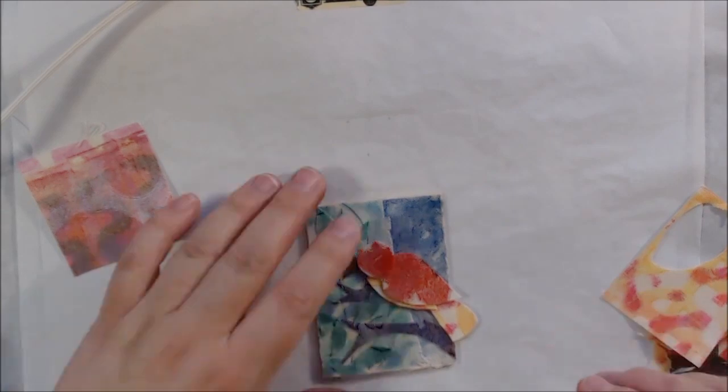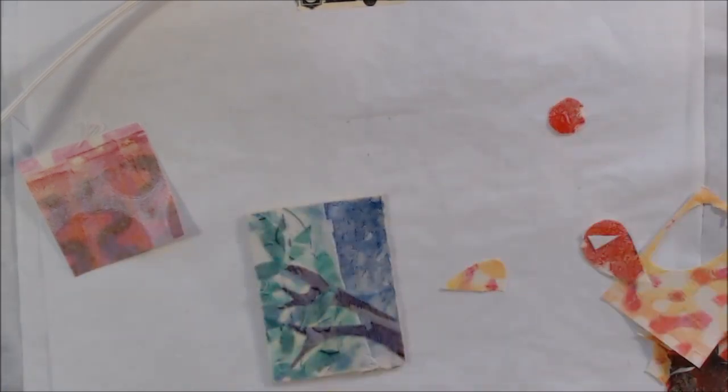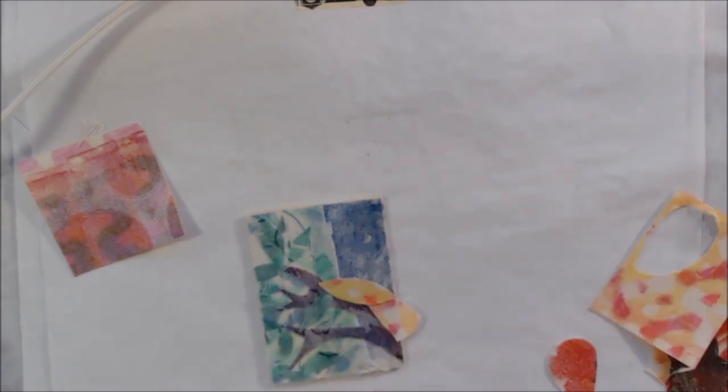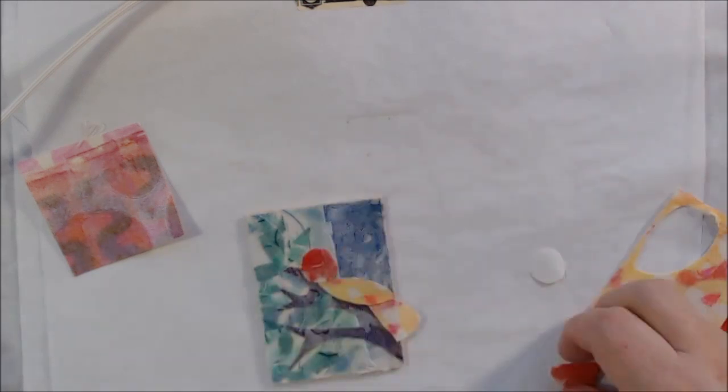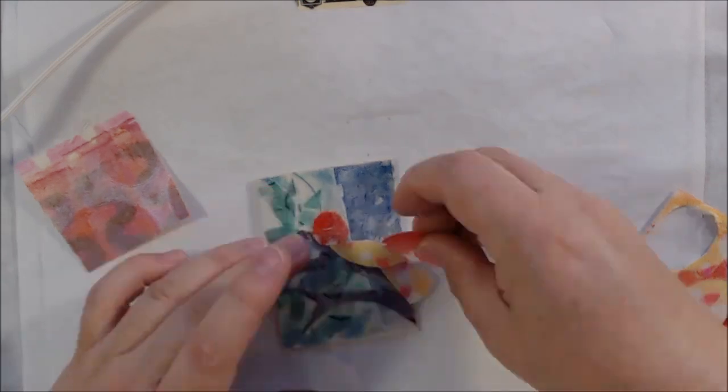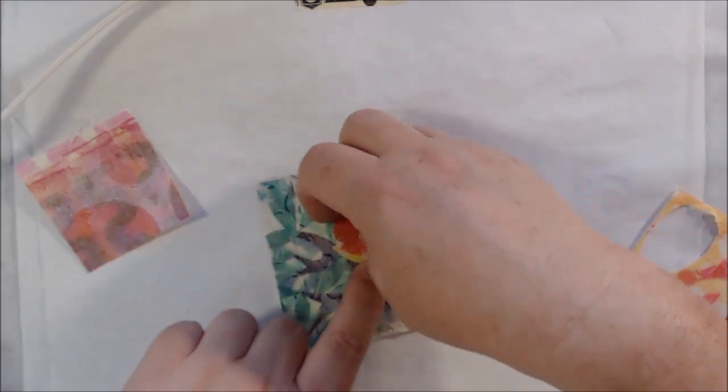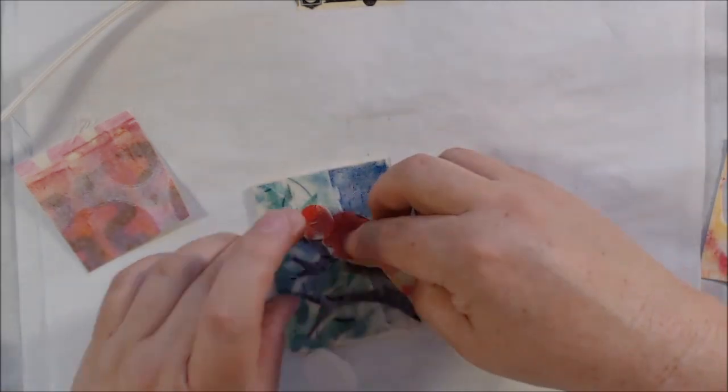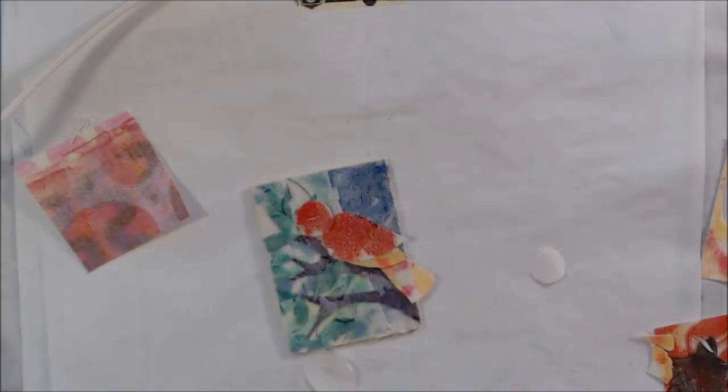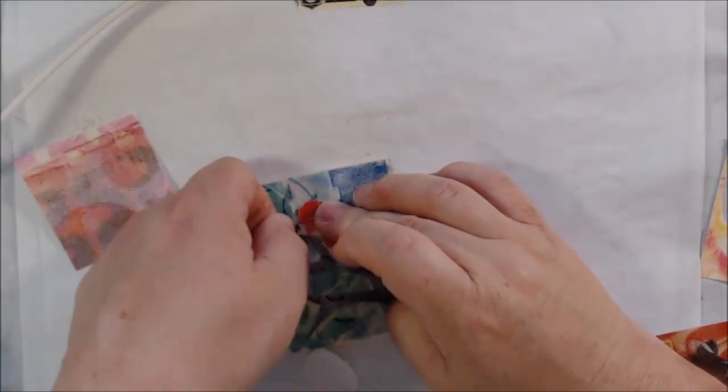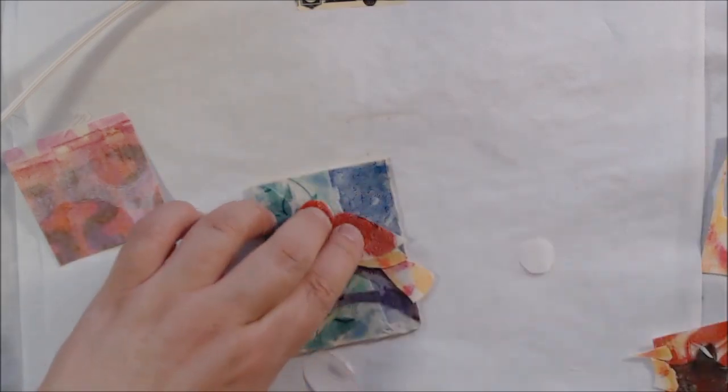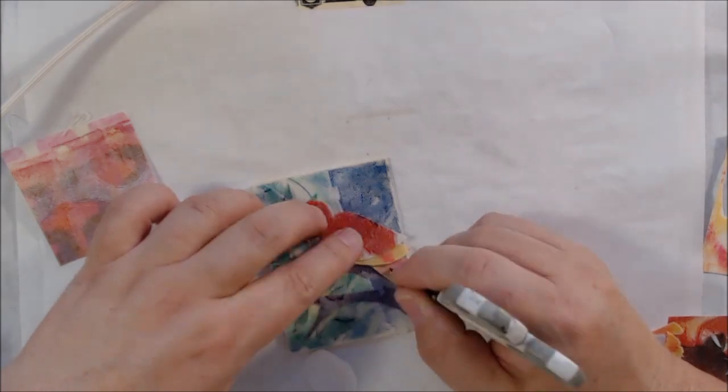Then I trimmed out another piece of a purple print to make some branches, and then a different green print to make some leaves, and then now I have a red and an orangey yellow piece and I'm cutting out a bird.